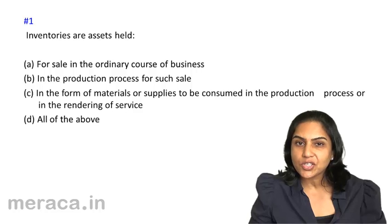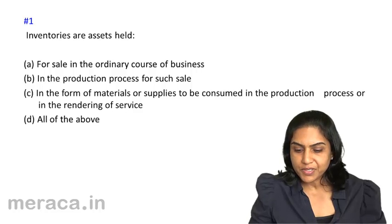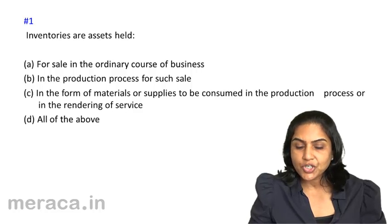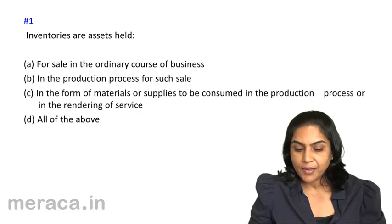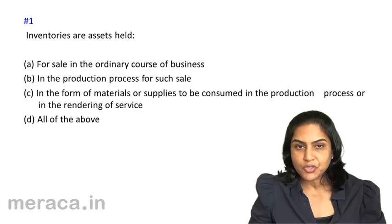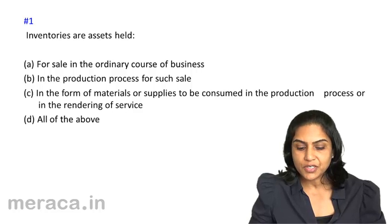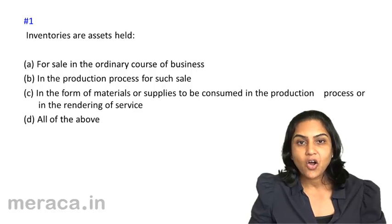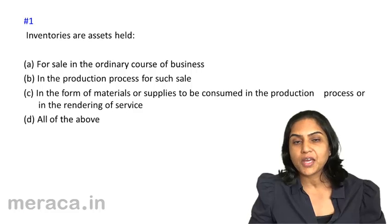Option A: For sale in the ordinary course of business. Option B: In the production process for such sale. Option C: In the form of materials or supplies to be consumed in the production process or in the rendering of services. And Option D: All of the above.